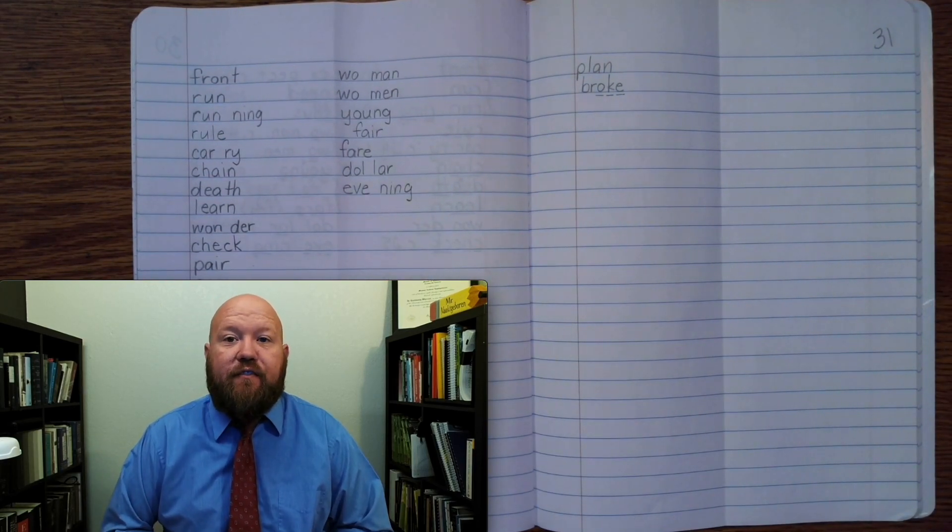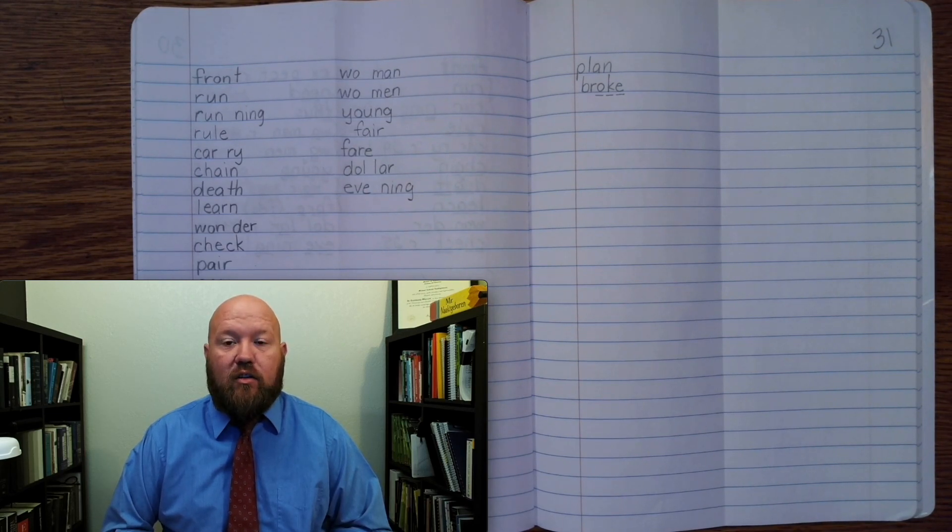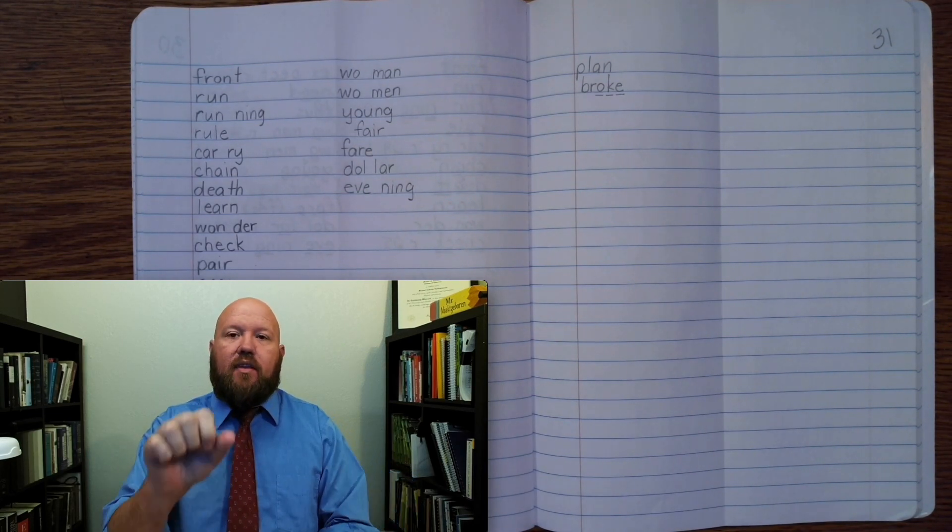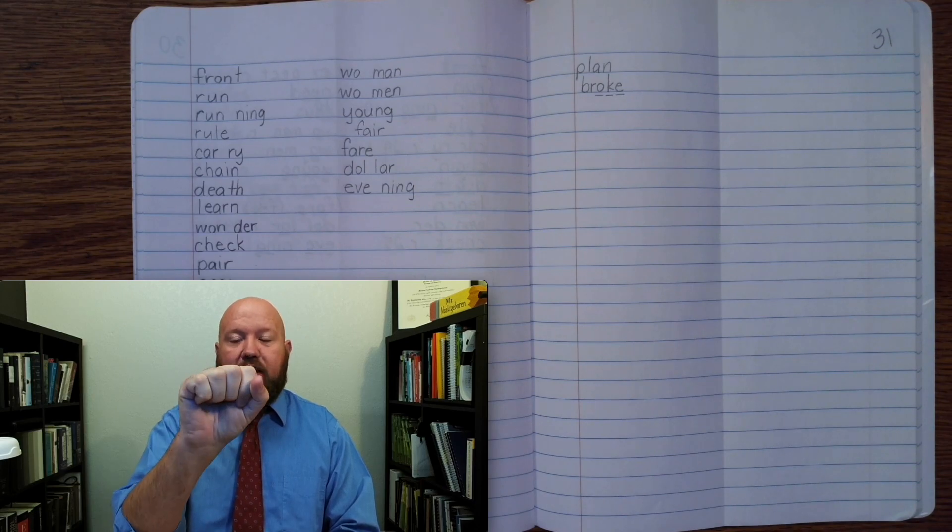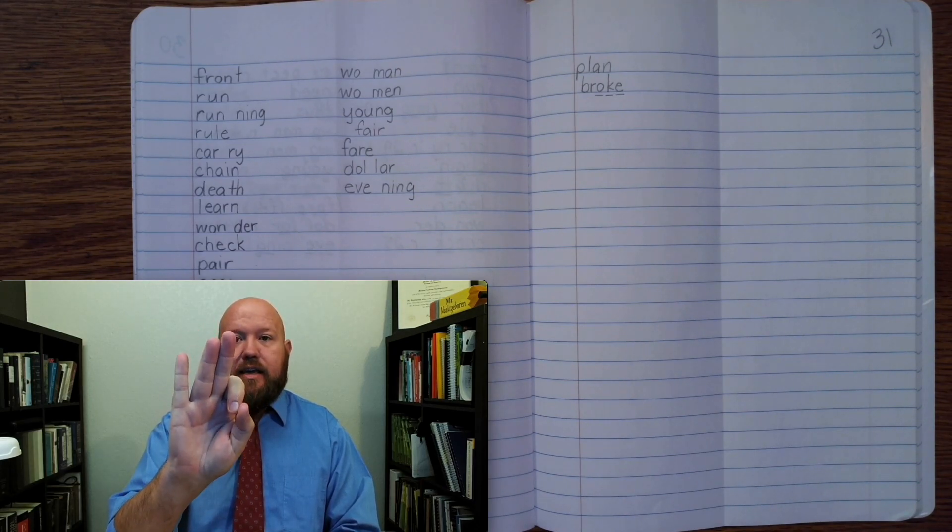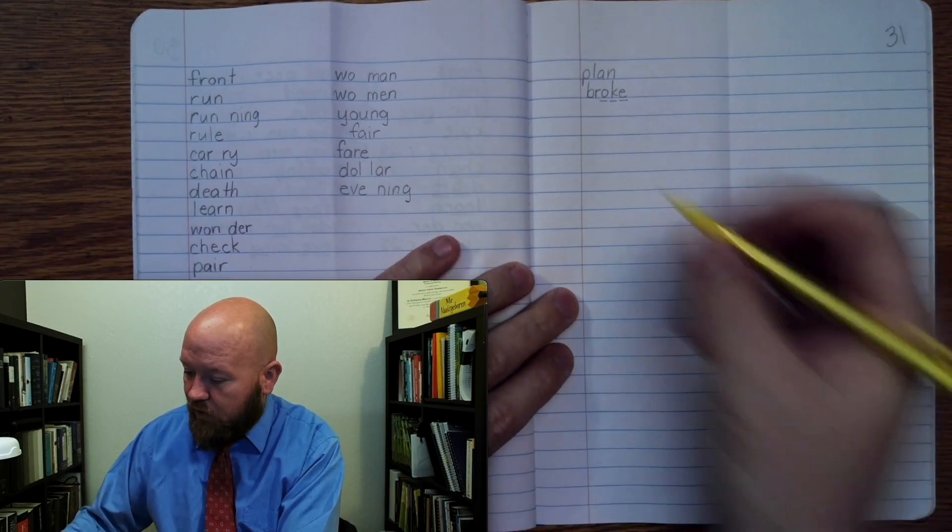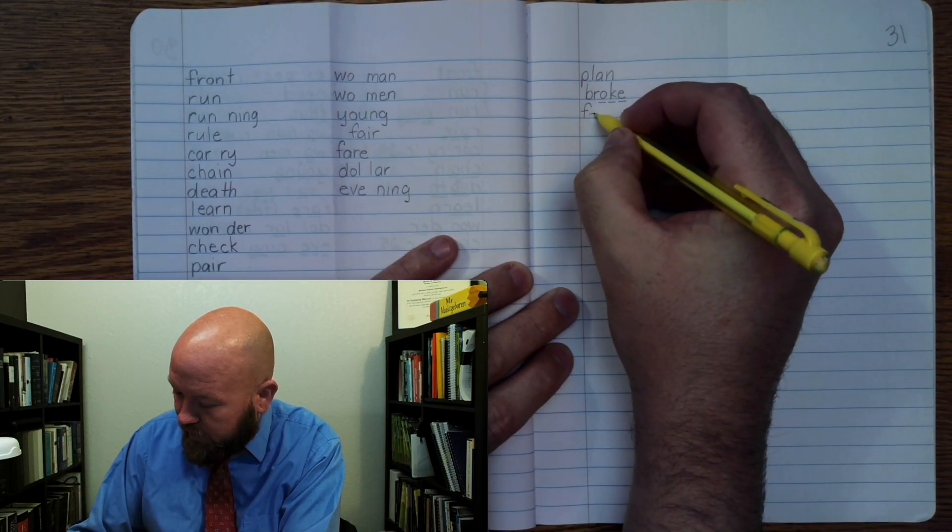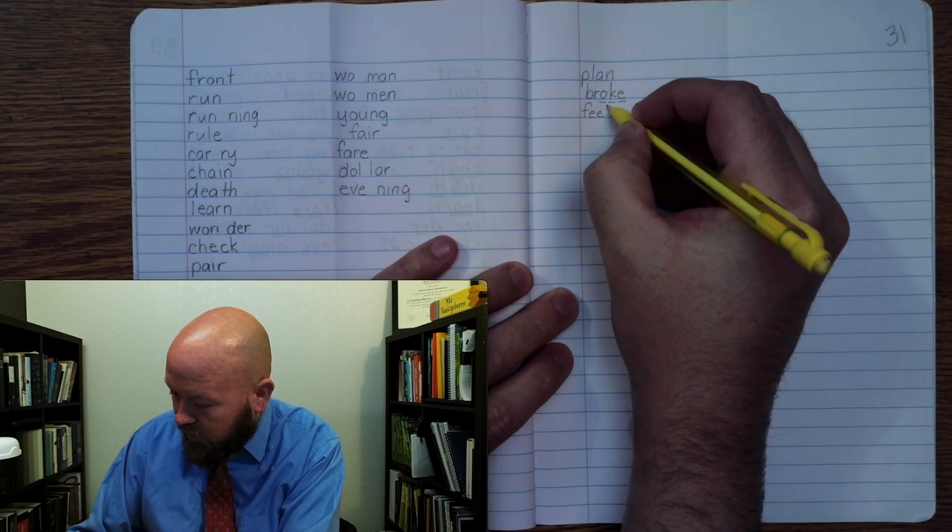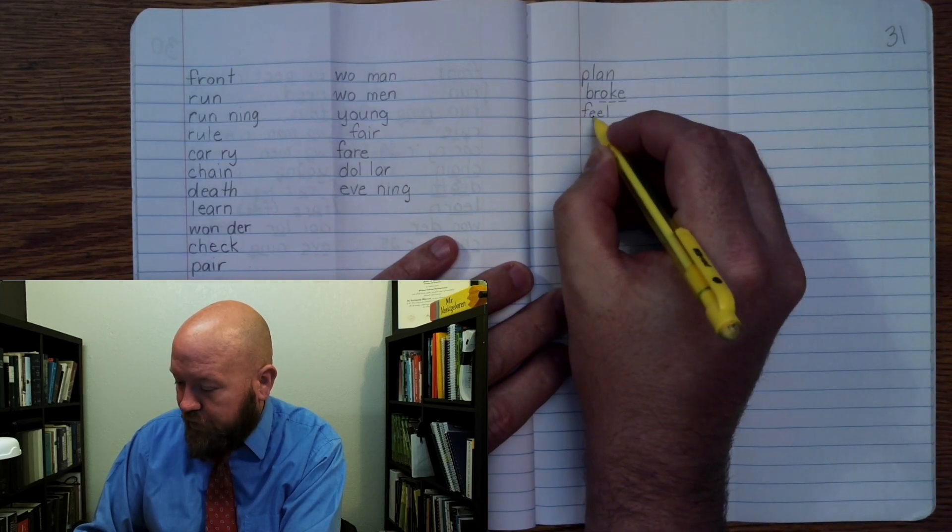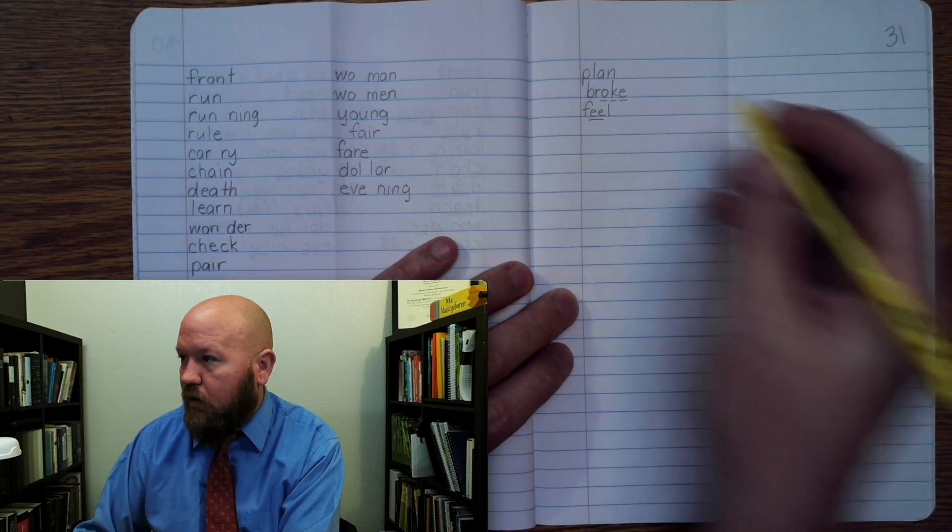The next word is feel. Like, how do you feel? Or can you feel this? Feel. Base word, feel. F-E-E-L. Feel. We're going to use the double E. Feel. F-E-E-L. Markings. F-E once, E-L. Feel.